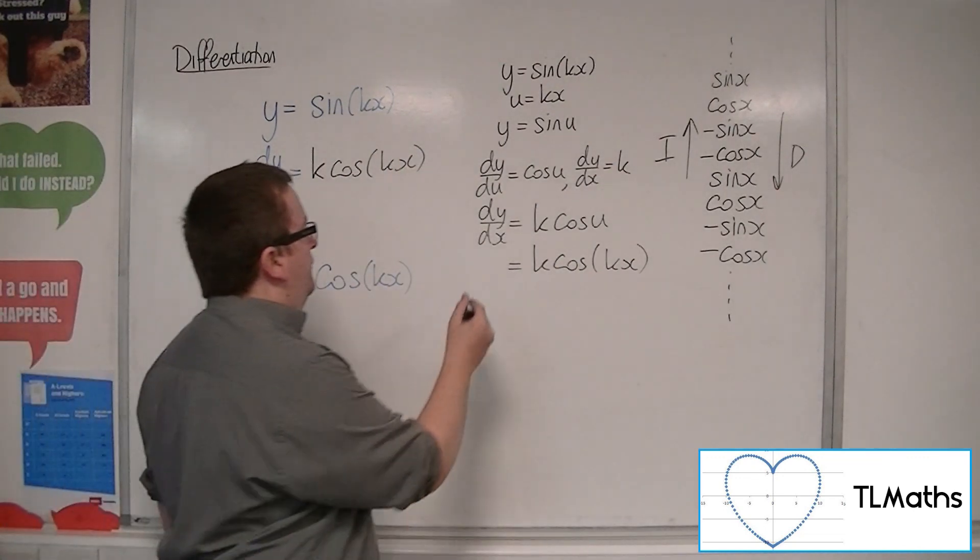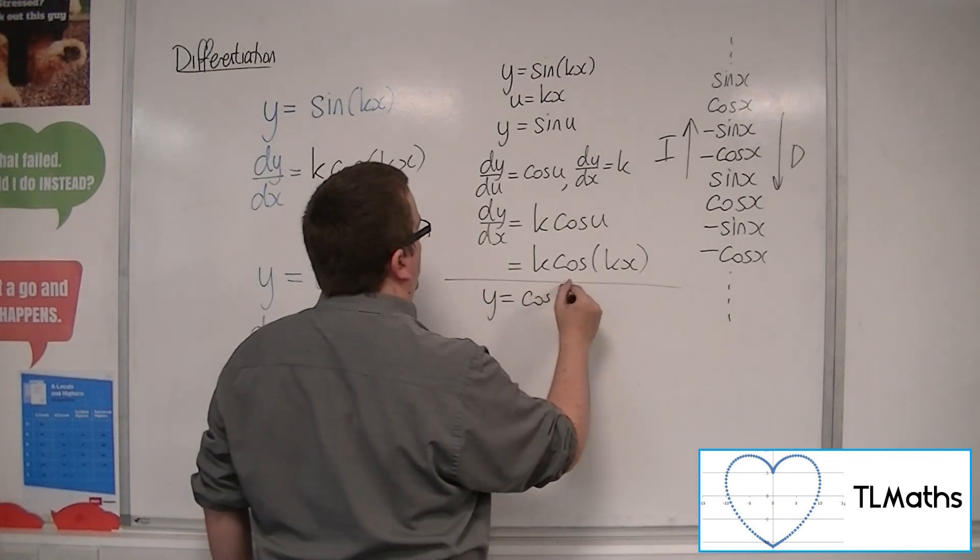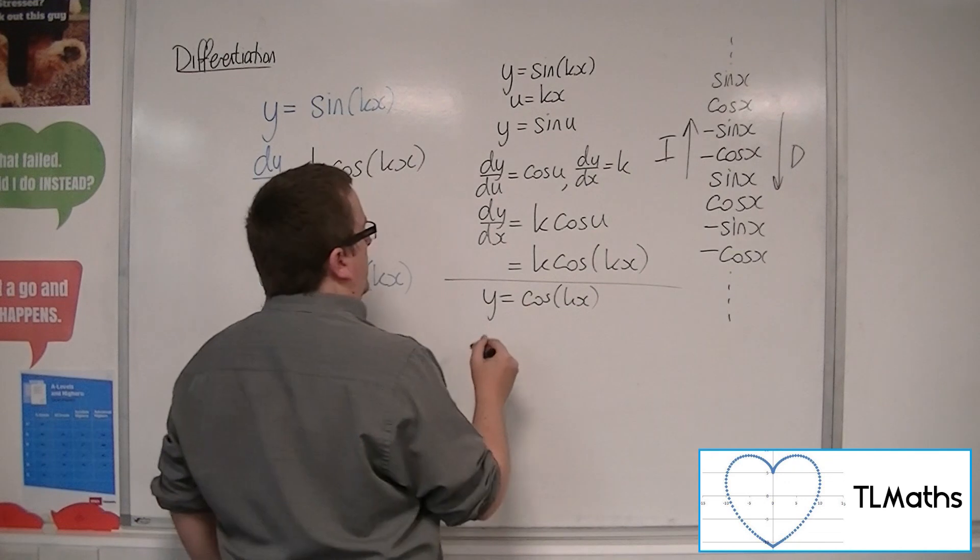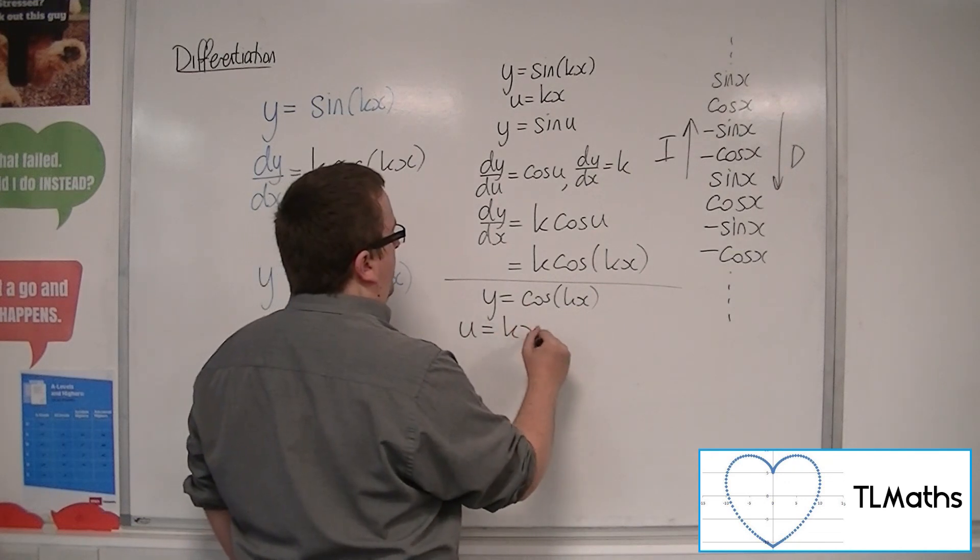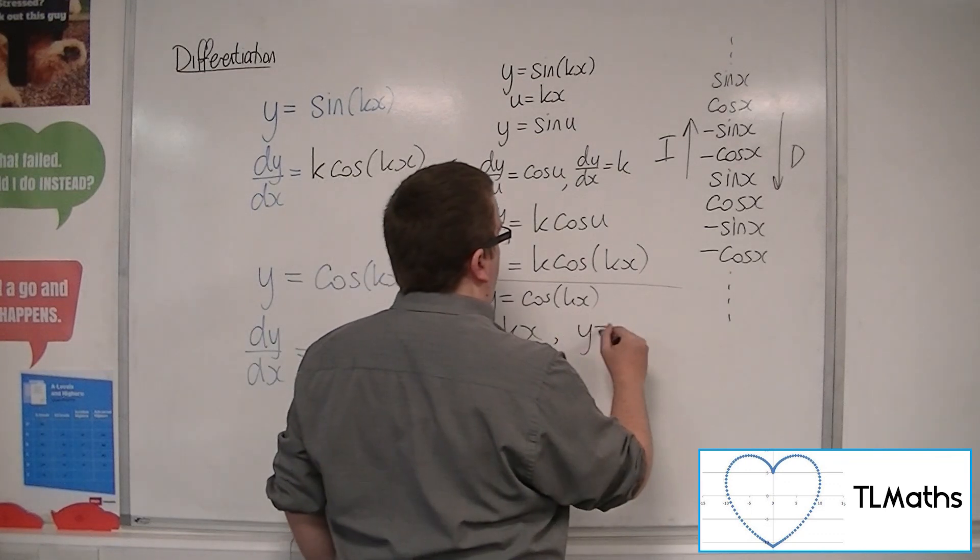Now likewise, we can replace this with y equals cosine of kx. So if I use the same method, let u be kx, then y is equal to cosine of u.